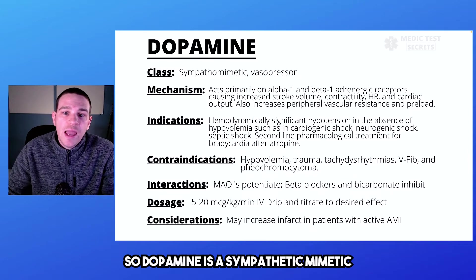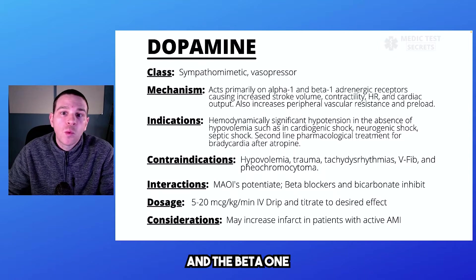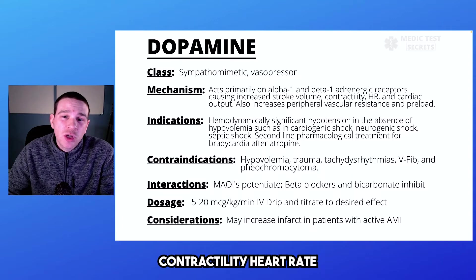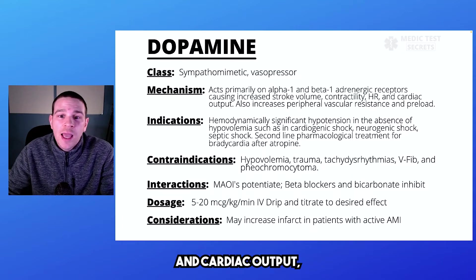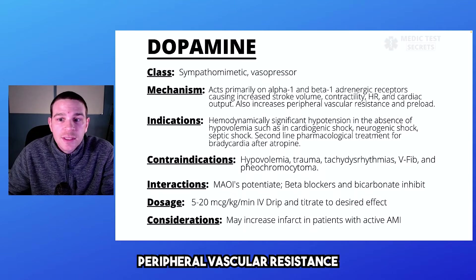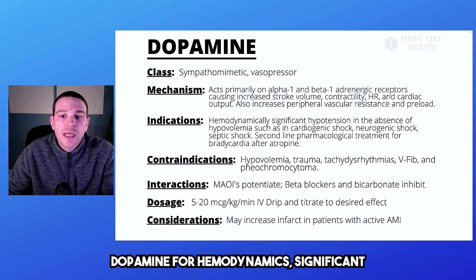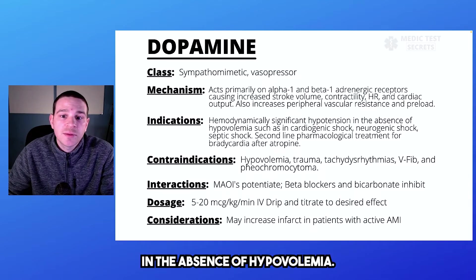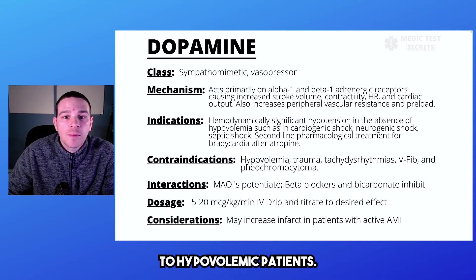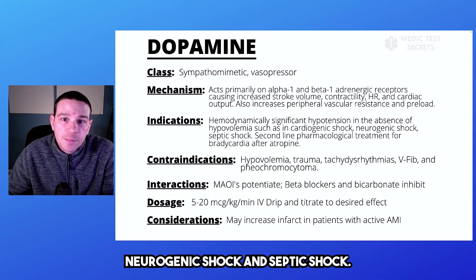Dopamine is a sympathomimetic or a vasopressor. It acts primarily on the alpha-1 and beta-1 adrenergic receptors, causing increased stroke volume, contractility, heart rate, and cardiac output. Dopamine also increases peripheral vascular resistance and preload. We use dopamine for hemodynamically significant hypotension in the absence of hypovolemia — we don't want to give this to hypovolemic patients. We give it for cardiogenic shock, neurogenic shock, and septic shock.